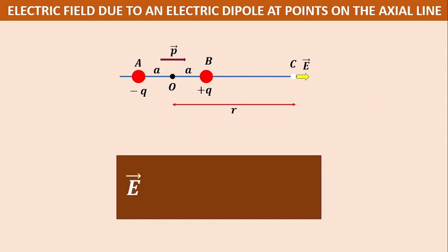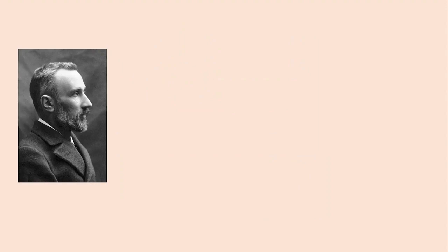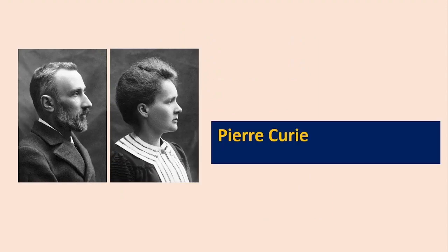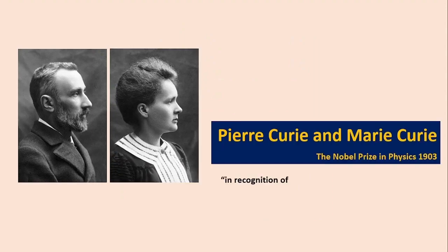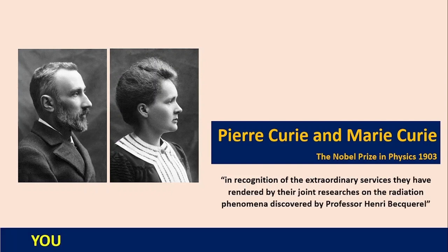e axial vector equals 1 by 4 pi epsilon 0, 2p vector by r cube. Thank you.